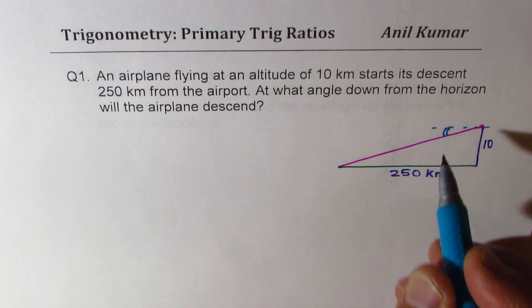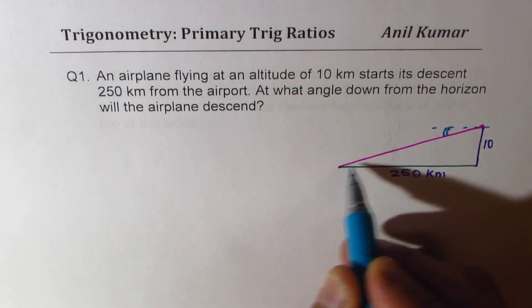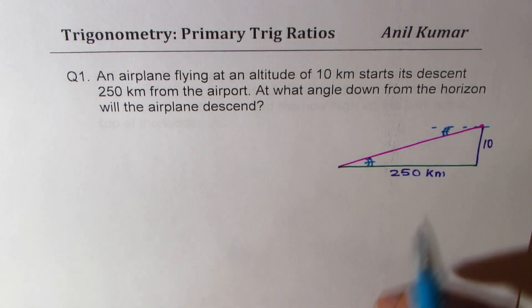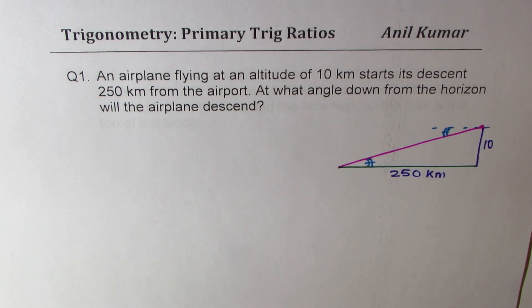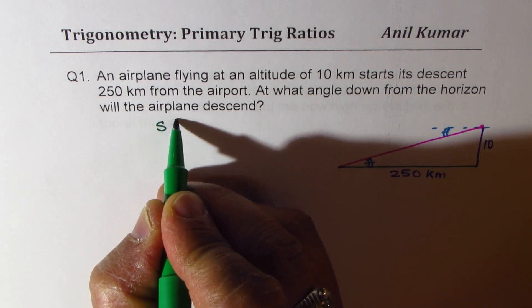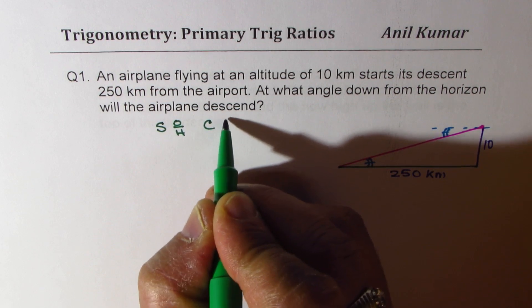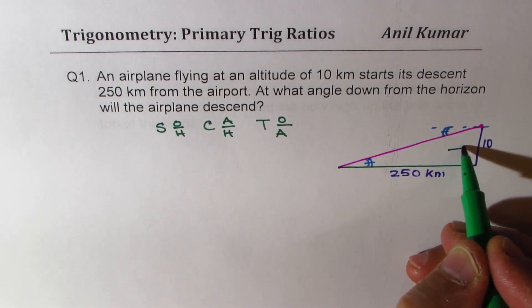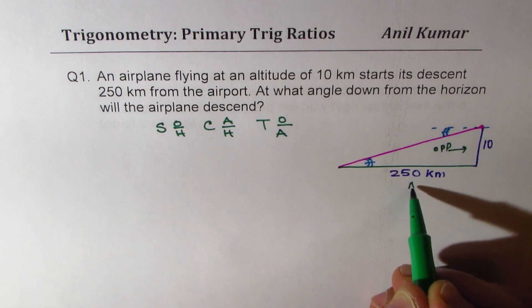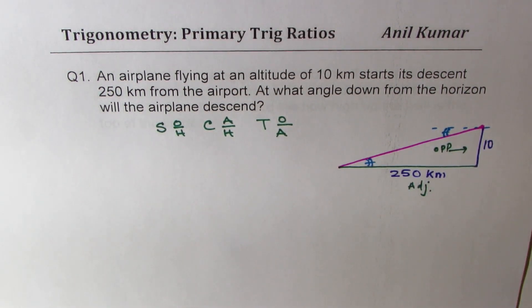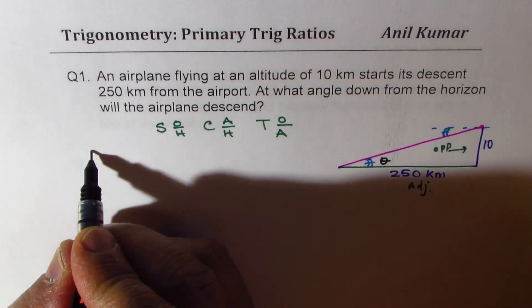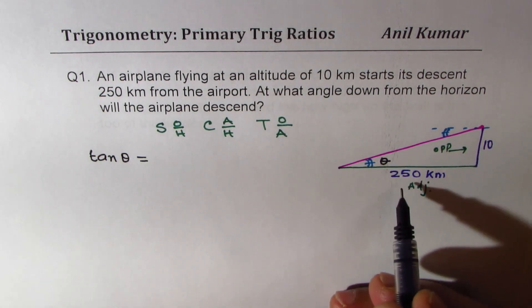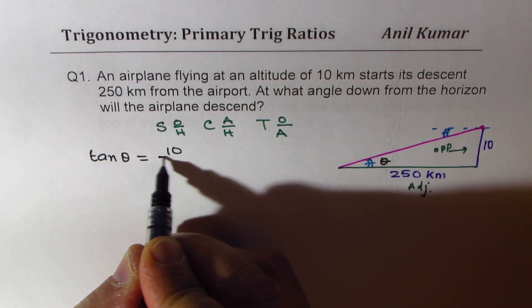Distance is horizontal, and that is the angle at which it is descending — also called the angle of depression. Now see this Z-pattern. From the Z-pattern, these two angles are exactly the same. So we can find the angle using trigonometric ratios. Remember SOH-CAH-TOA: sine is opposite over hypotenuse, cosine is adjacent over hypotenuse, and tan is opposite over adjacent. Since we are working with the opposite side and the adjacent side, we use tan. Let's name the angle theta, so tan θ = opposite/adjacent = 10/250.